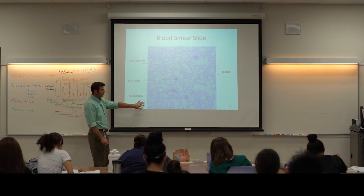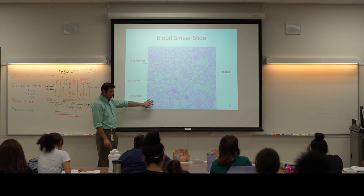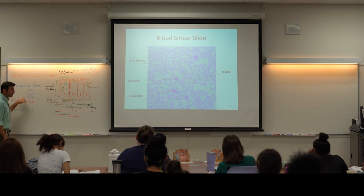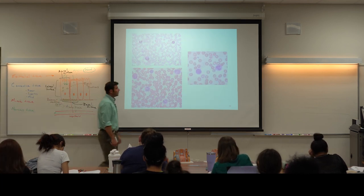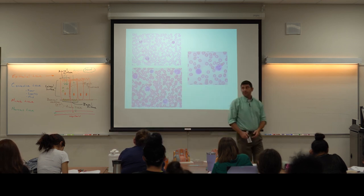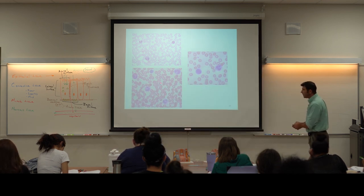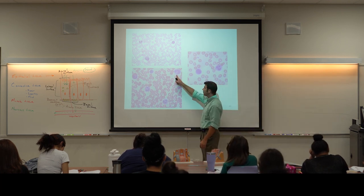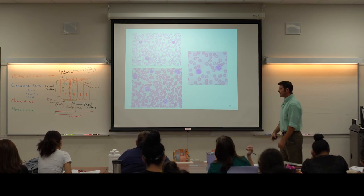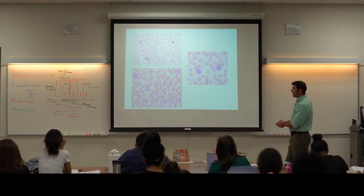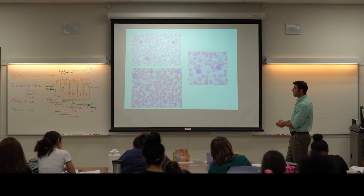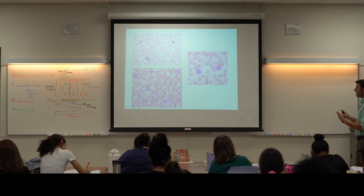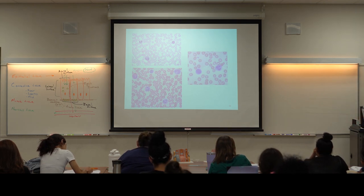Fluid connective tissue: we don't have lymph on the lab list, but we need to recognize blood as an example of fluid connective tissue. The blood slide will mostly show a collection of red blood cells, though you may also see some white blood cells — they are rare. In the second half of the class we'll learn each different type of white blood cell and its function. For now we just have to recognize this as blood, a type of fluid connective tissue.